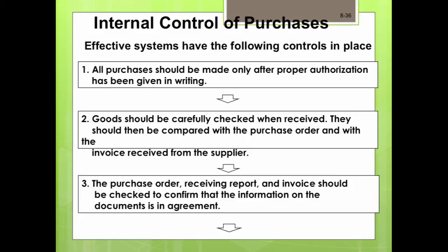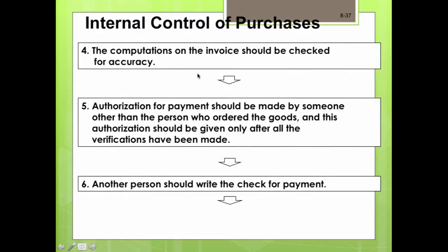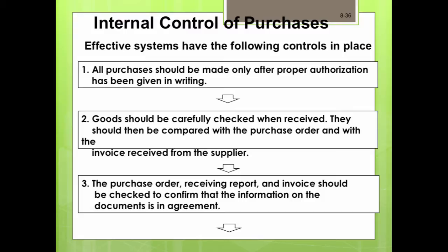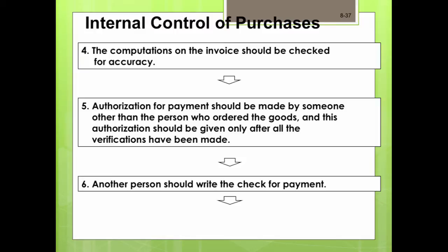Take a moment to review these internal controls related to the purchasing process. First, all purchases should be made only after proper written authorization has been given. Second, goods should be carefully checked when received and compared with the purchase order and the invoice from the supplier. Third, the purchase order, receiving report, and invoice should be checked to confirm that the information is in agreement. Fourth, the computations on the invoice should be checked for accuracy. Fifth, authorization for payment should be made by someone other than the person who ordered the goods, and only after all verifications have been made.